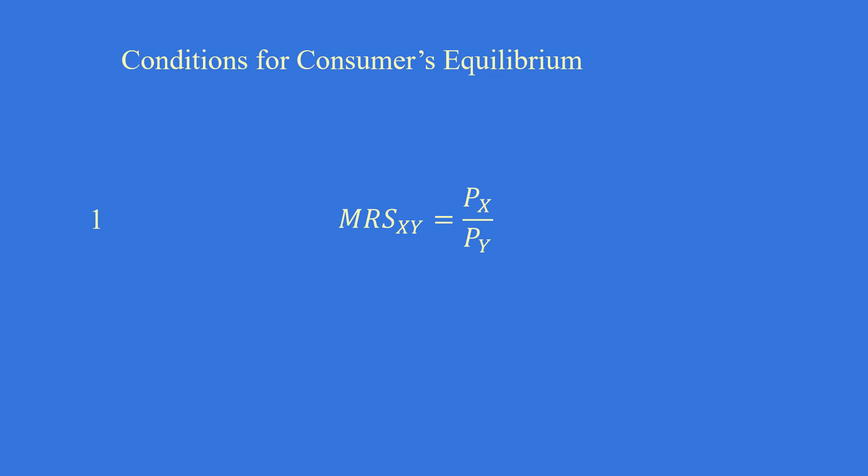1. Marginal rate of substitution of X for Y equal to PX by PY, i.e. price ratio. 2. Marginal rate of substitution of good X for good Y must be diminishing. The indifference curve must be convex towards the origin.